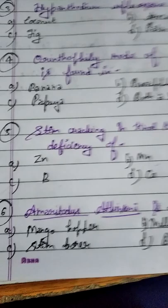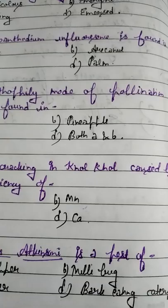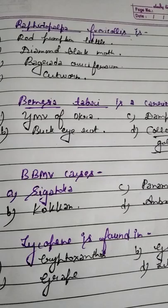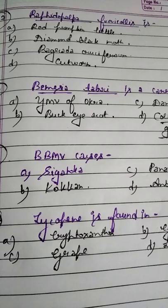Student, question number 6. Empoasca atkinsonii — you have to tell what this is. This is a very easy question. Empoasca atkinsonii is mango hopper. Also remember: bark eating caterpillar is Inderbela quadrinotata, Stem borer is Batocera rufomaculata, and mealybug is Planococcus citri. Please students remember these.